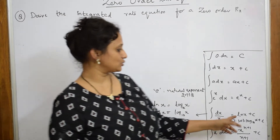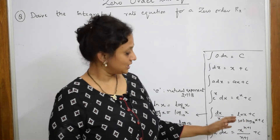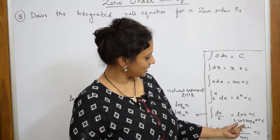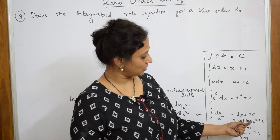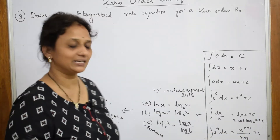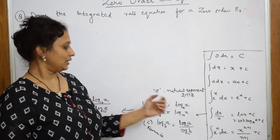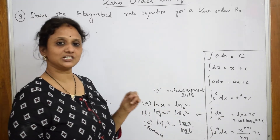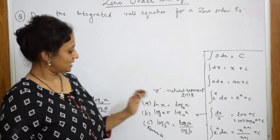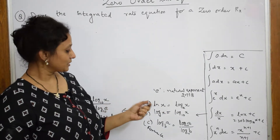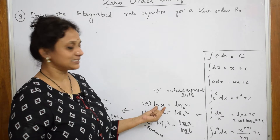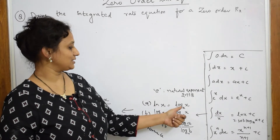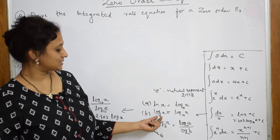The fifth formula: dx/x is equal to ln x plus c. When we solve this particular equation we get 2.303 log₁₀ x plus c. Let us see how we get that. Basically, e means natural exponent which is equal to 2.718. Now, ln x is equal to log x base e.